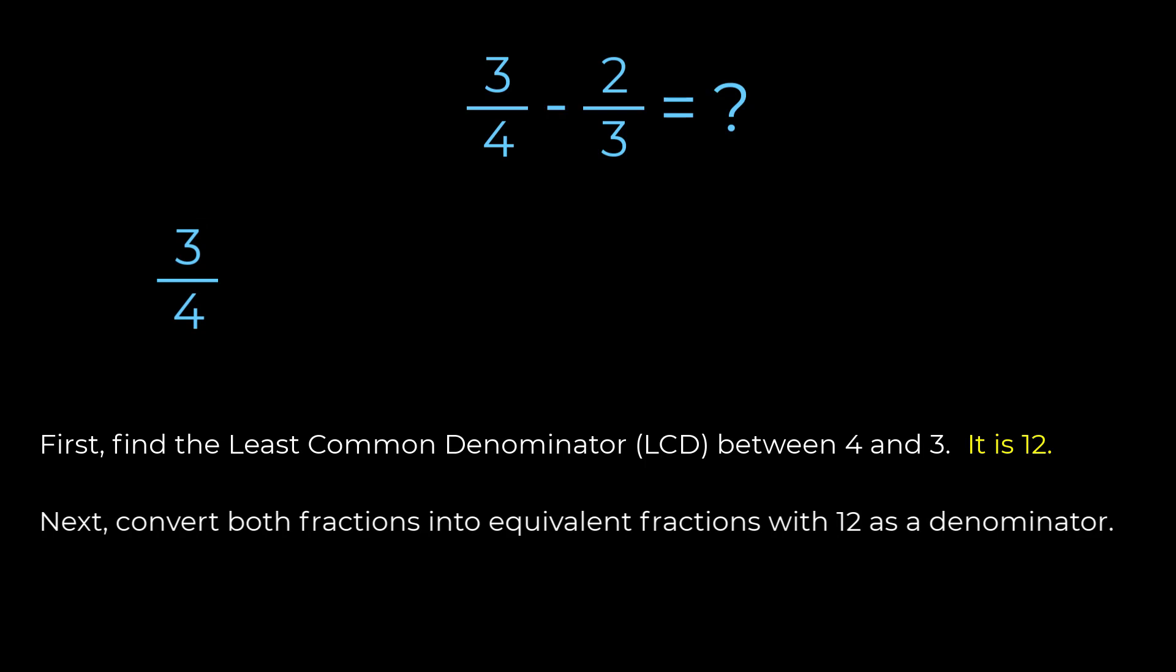I need to multiply both the numerator and denominator by three in order to find a fraction equivalent to three quarters which has a denominator of twelve. The equivalent fraction is nine over twelve.